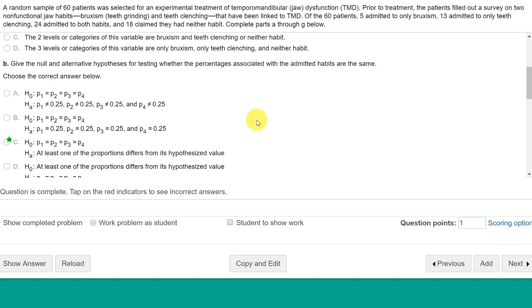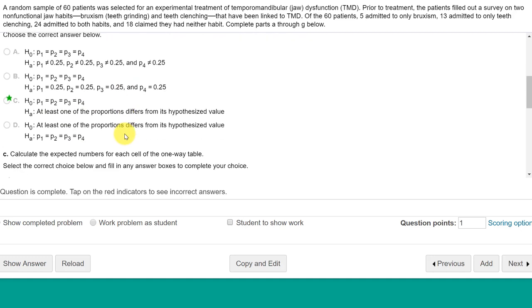We need to give the null and the alternative. The null for goodness of fit problems is that the proportions of the categories are either equal, as they are in this case, or that if we're given a reference distribution, that the proportions are equal to those references. In this case, it's the simple one, just that they're all equal, that they have the same proportion. The alternative is that at least one of the proportions differs. We don't know which one.